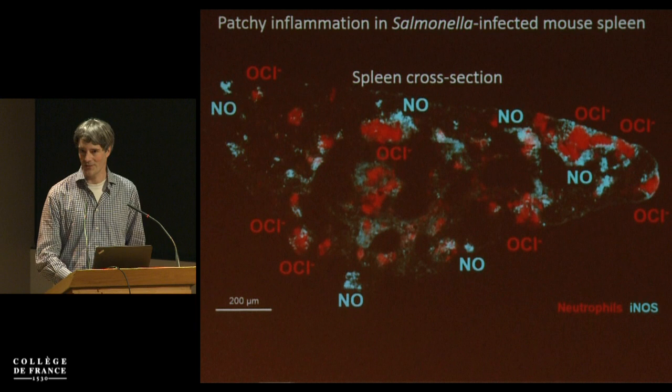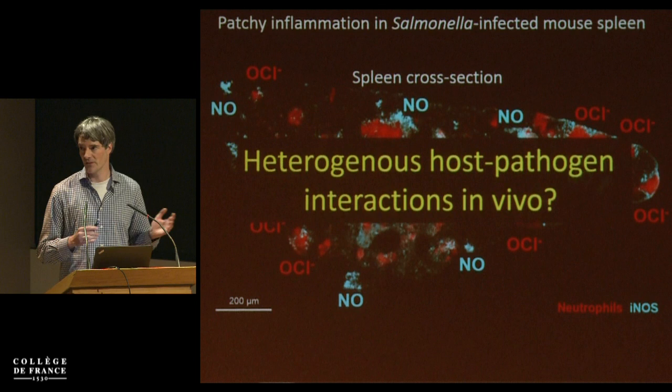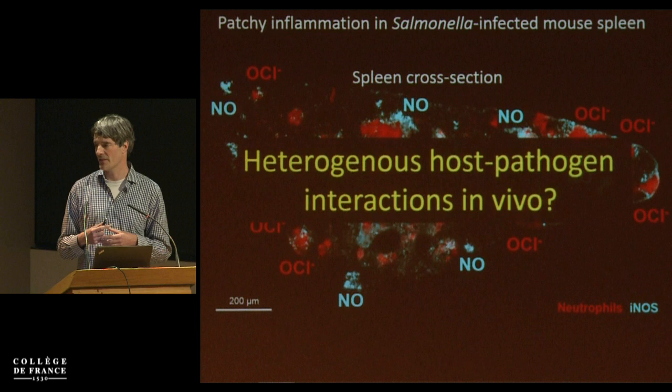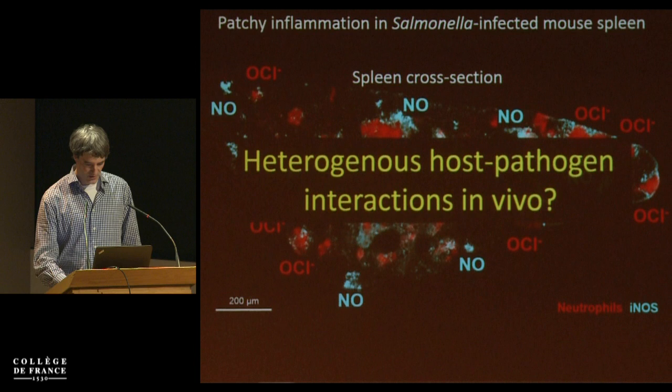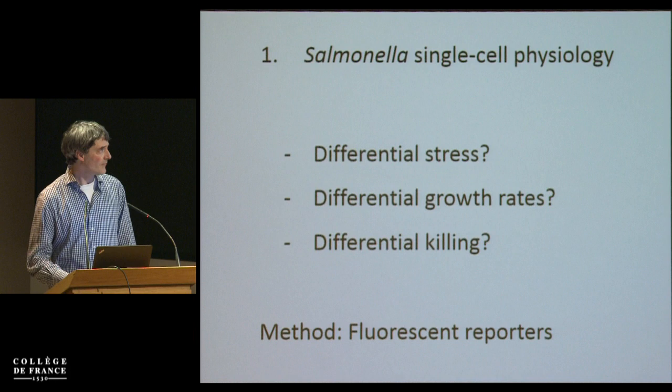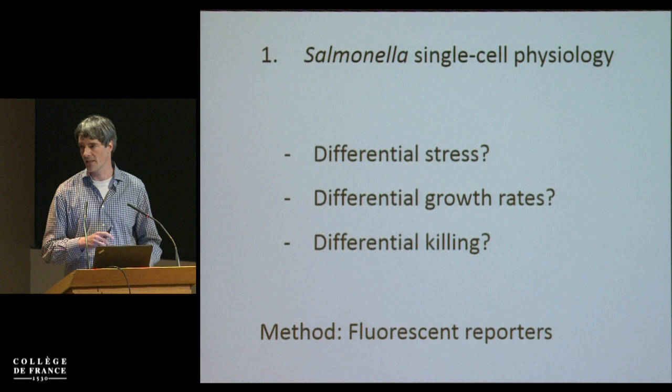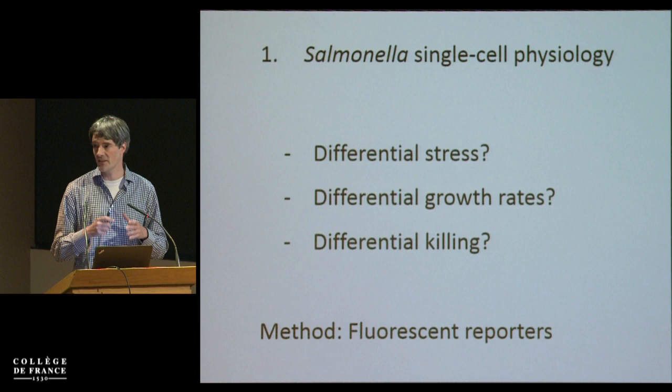Since a few years, we have been struggling with the question of whether this has any relevance. Are there many different host niches that provoke many different pathogen behaviors? Does it impact on the outcome of disease and treatment? We use different approaches. The first one is we look at the single-cell physiology of bacteria, because we think some cells may have one physiology and others a different physiology in the same tissue at the same time.